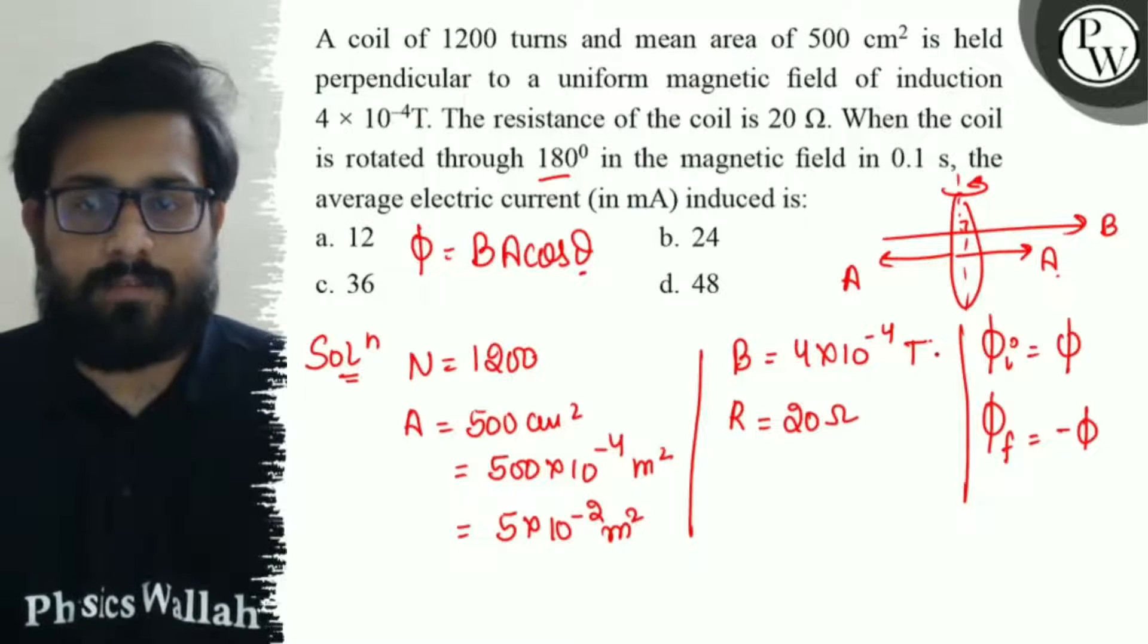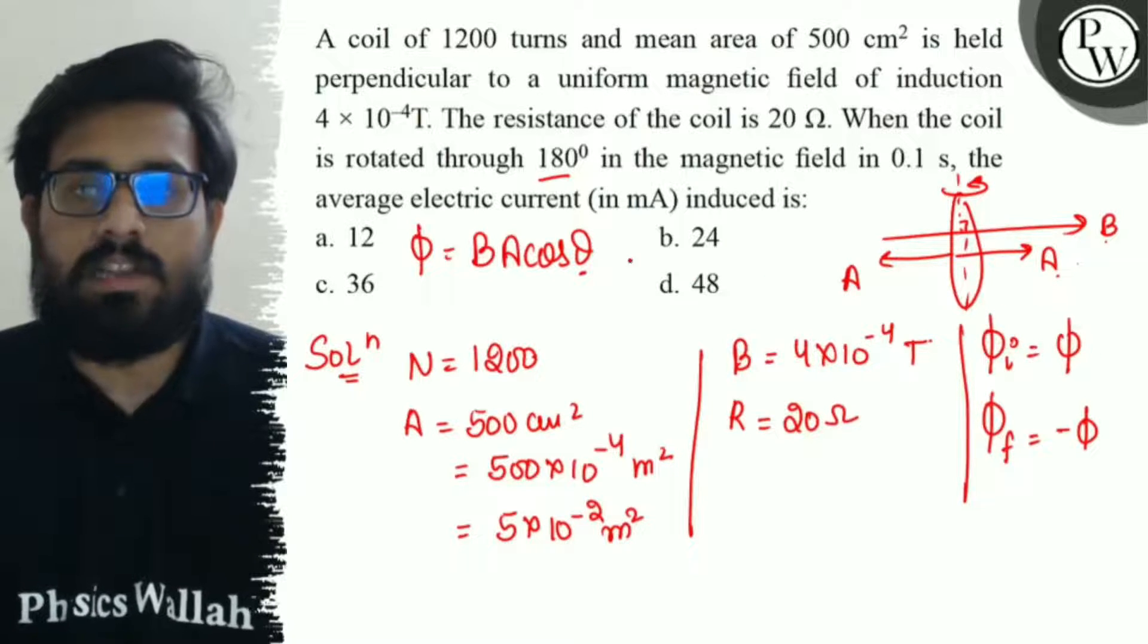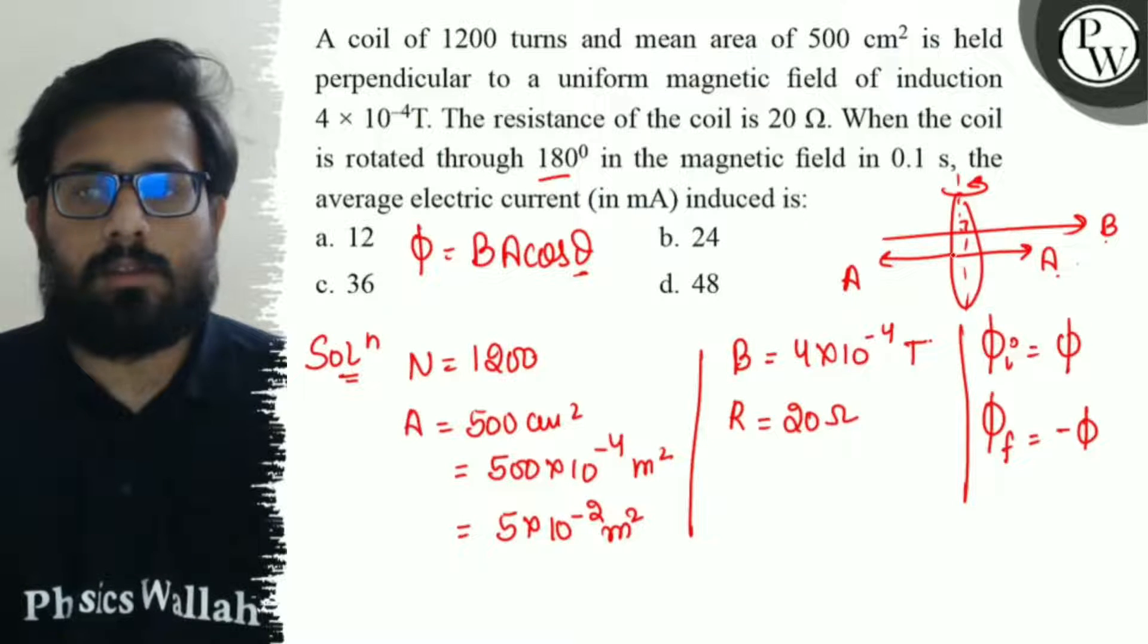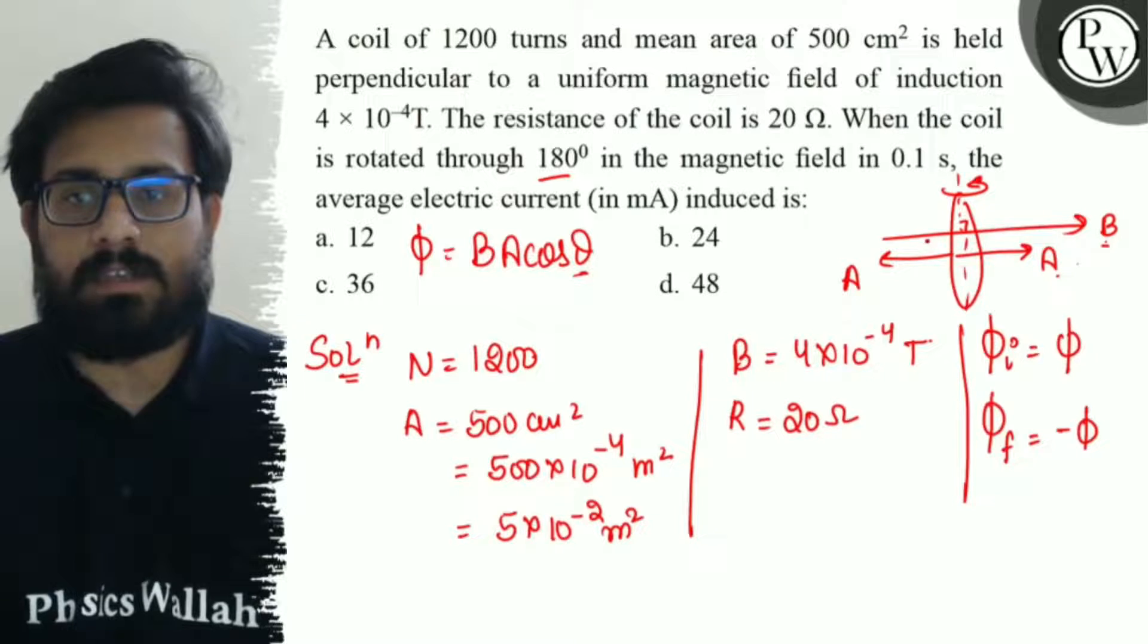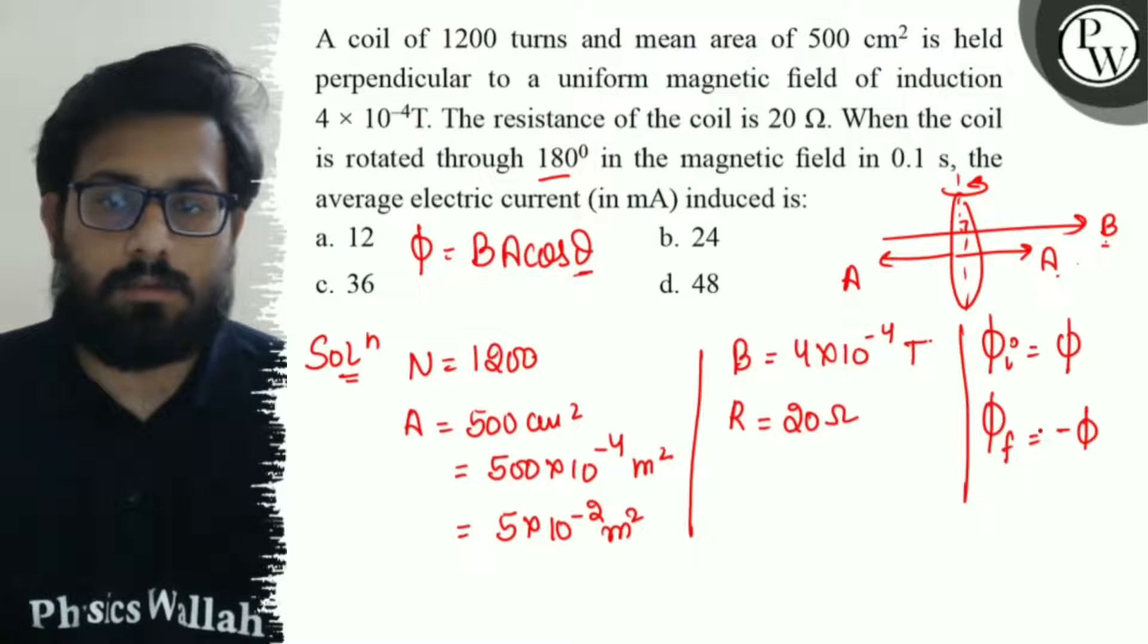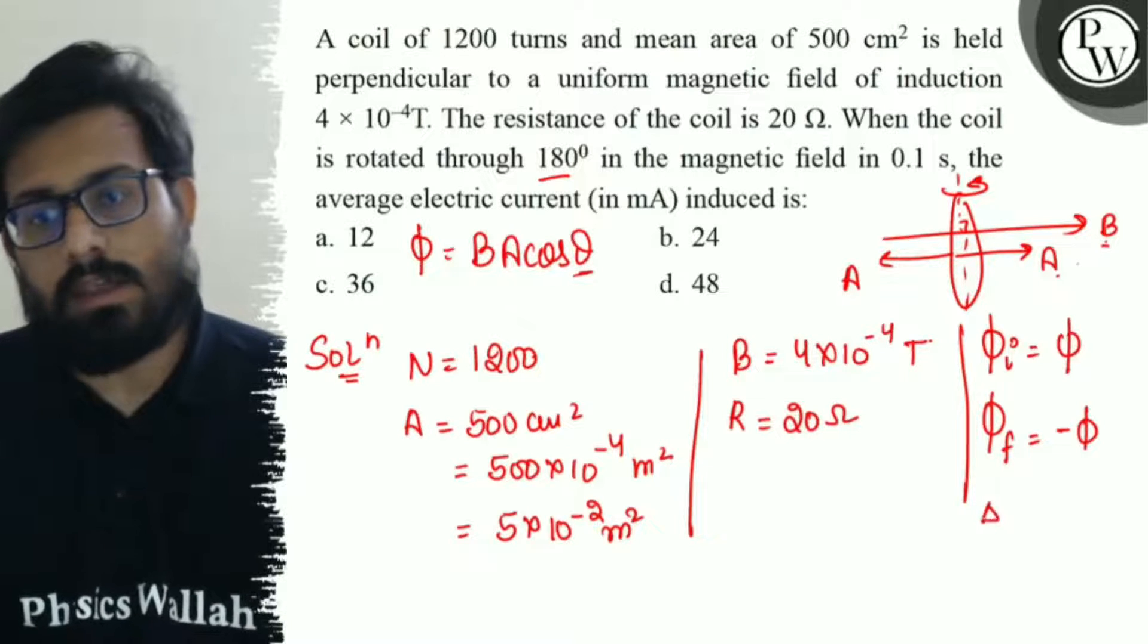The magnetic flux Φ = BA cos θ, where θ is the angle between area vector and magnetic field. Initially, area vector and magnetic field are in the same direction, so cos 0. When rotated 180 degrees, the angle becomes 180° and cos 180 = -1. So this comes out to be -Φ. The change in flux ΔΦ = -2Φ.